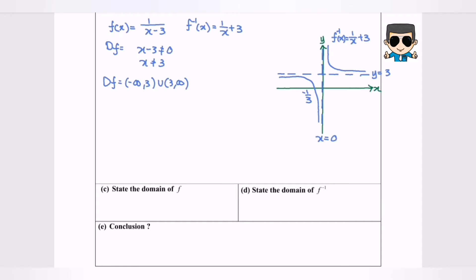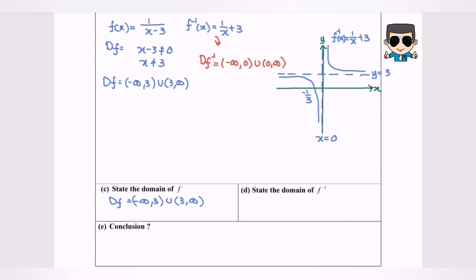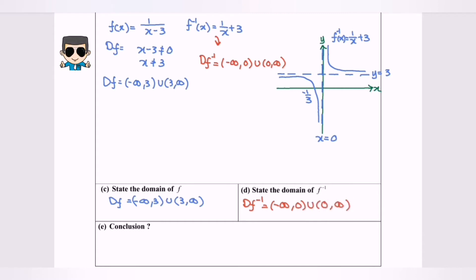Next we focus on f inverse. The domain for f inverse equals negative infinity until 0, union 0 until positive infinity, where 0 is not included. So to summarize: the domain for f is negative infinity until 3 union 3 until positive infinity; the domain for f inverse is negative infinity until 0 union 0 until positive infinity, where 0 is not included.